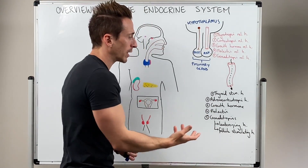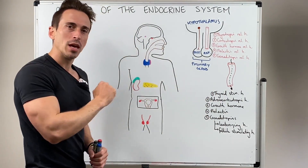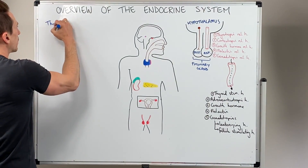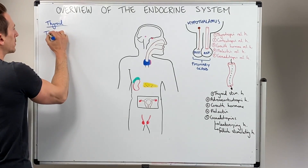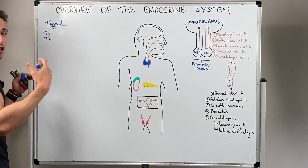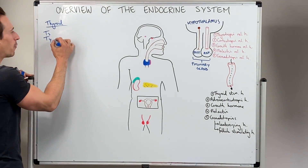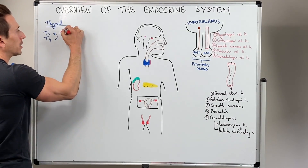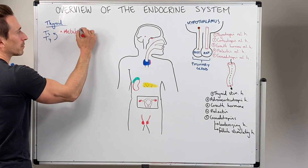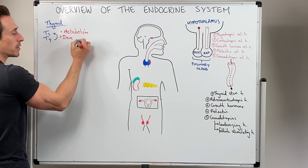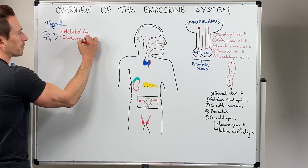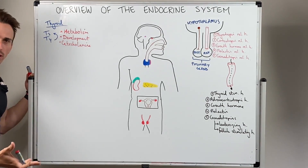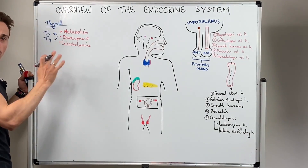Thyrotropin-releasing hormone stimulates the release of thyroid-stimulating hormone, which travels to the thyroid — the endocrine gland that hugs the front of the trachea. The thyroid produces thyroid hormone: T3, which is triiodothyronine, and T4, which is thyroxine. Predominantly T4 ends up turning into T3. The functions of these thyroid hormones include metabolism, appropriate development — especially embryological development — and stimulating catecholamine release, such as noradrenaline and adrenaline, or norepinephrine and epinephrine.